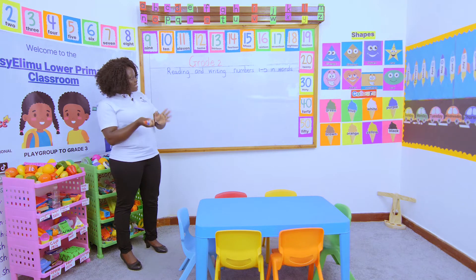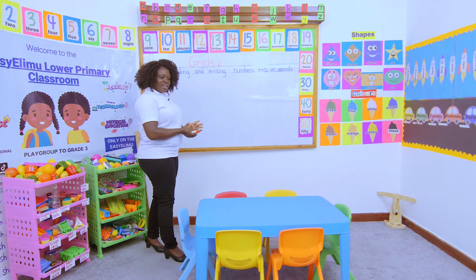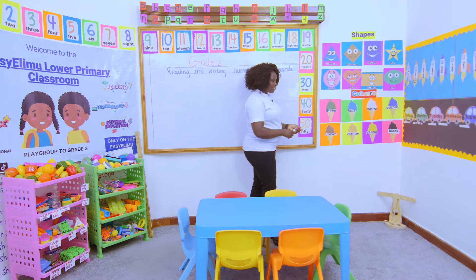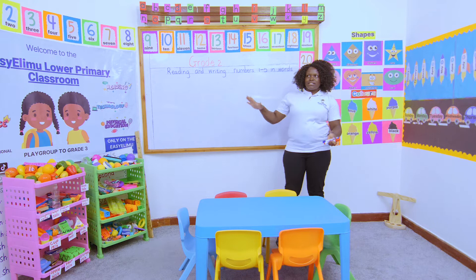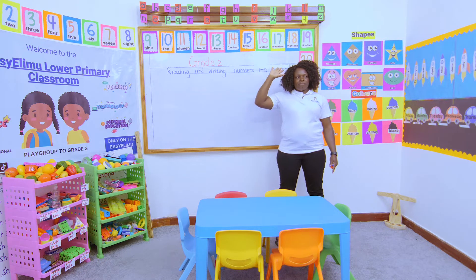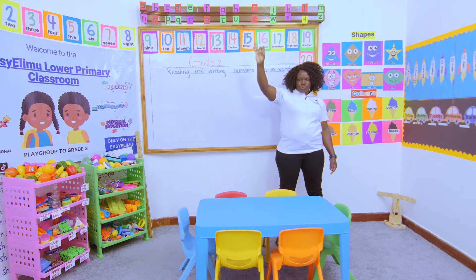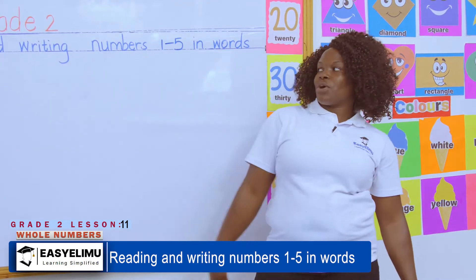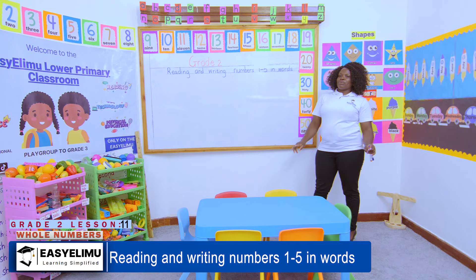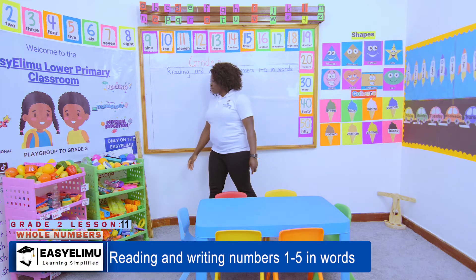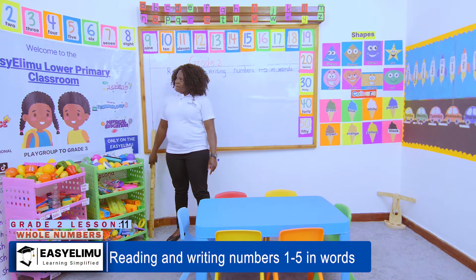We are going to read and write numbers 1 to 5. How many fingers do you have on one hand? Let's count all of us. Put your hand in the air. Here we go: 1, 2, 3, 4, 5. So how many fingers do you have on one hand? We have 5 fingers. Look around our hands — can you see numbers?